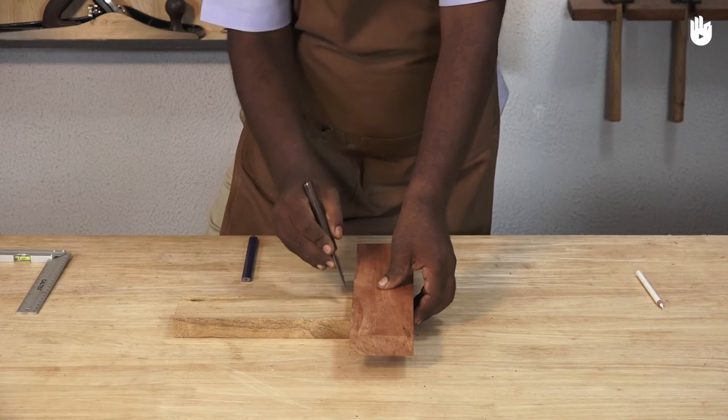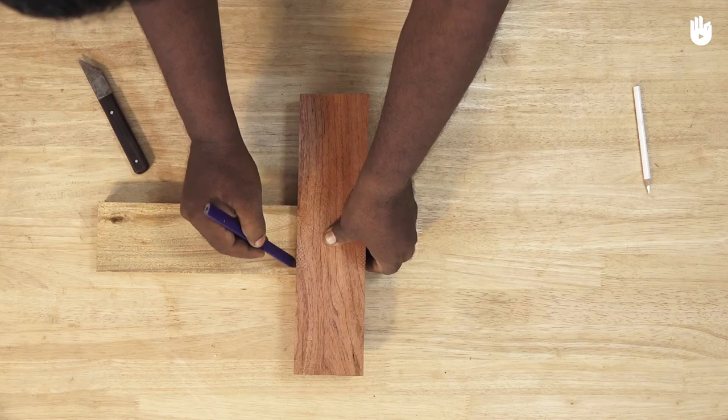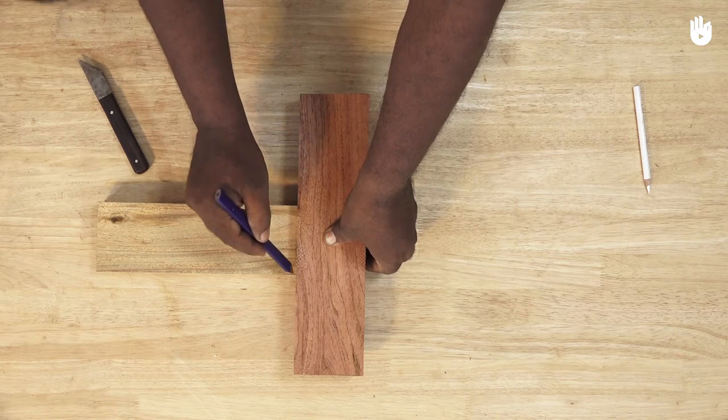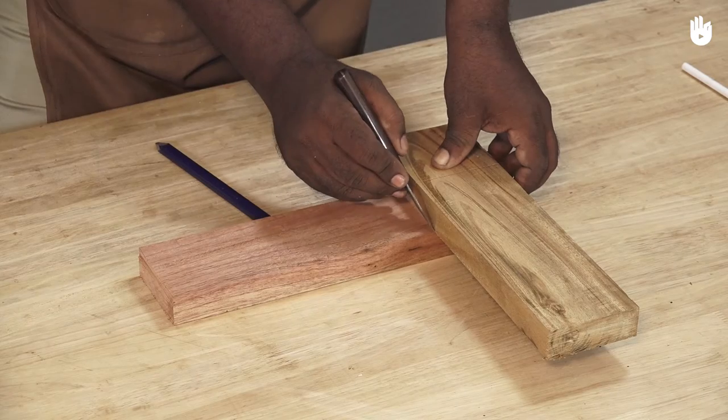Mark the width of the top work piece using a marking knife. Highlight the line with a pencil. Reverse the pieces and repeat the same step to mark the other piece.